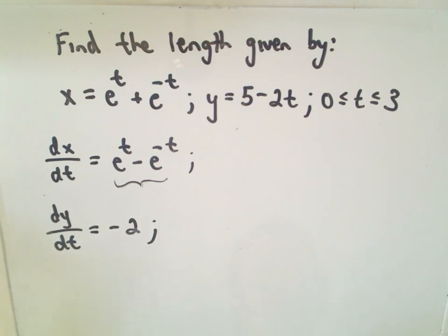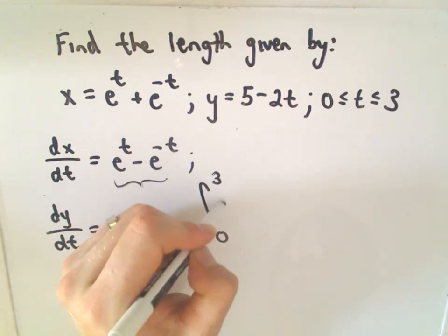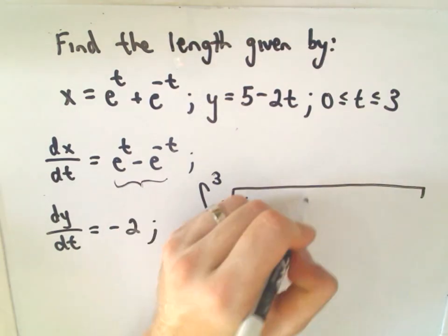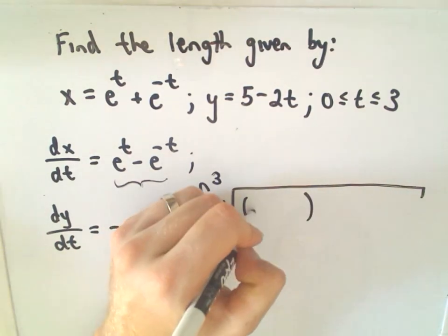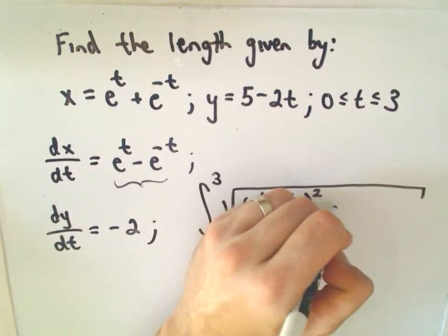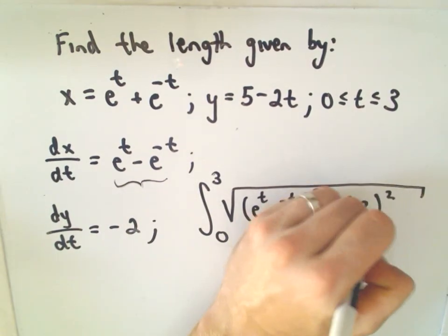Okay, so again, so if you really didn't think about that, you would get the problem correct here, I think. But, you'd be missing out on part of it. It would be easy to get it wrong in a different problem. So, again, it says we take the derivative of x with respect to t, which is e to the t minus e to the negative t. And we have to square it. And we add on to that the derivative of y with respect to t squared.